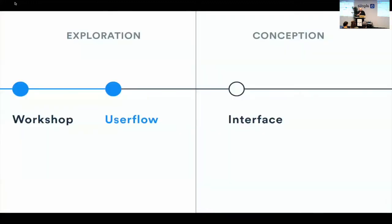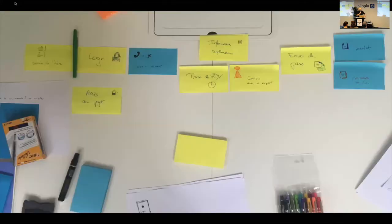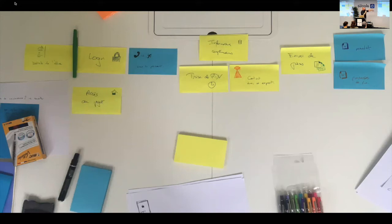After this we wanted to make the first user flow. This is our user flow — the first one, again on post-its. It's more easy to move the steps and find the optimal order. This version is very simple: you have a sign-in, you have the possibility for the user to make an appointment with an expert, and after it's possible to upload files.